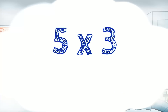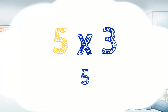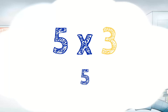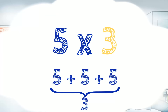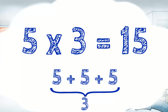Let's take one more example: 5 multiplied by 3. The first number is 5, so we'll add 5. The second number is 3, so we'll need to add 5 three times. That is 5 plus 5 plus 5, which makes 15. The answer is 15.